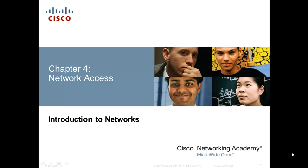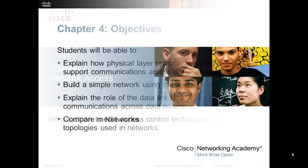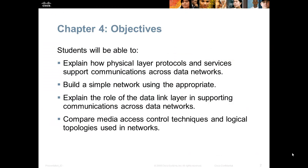This video will cover chapter 4. Chapter 4 is about getting network access. The chapter mainly covers the physical layer, which deals with signals, connectors, and cables, and also gets into the data link layer, which works very closely with the physical layer.